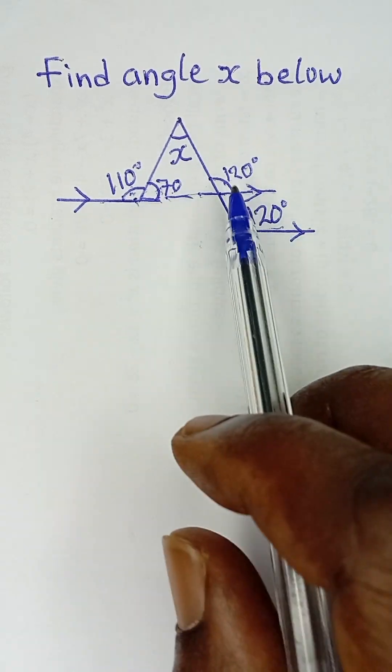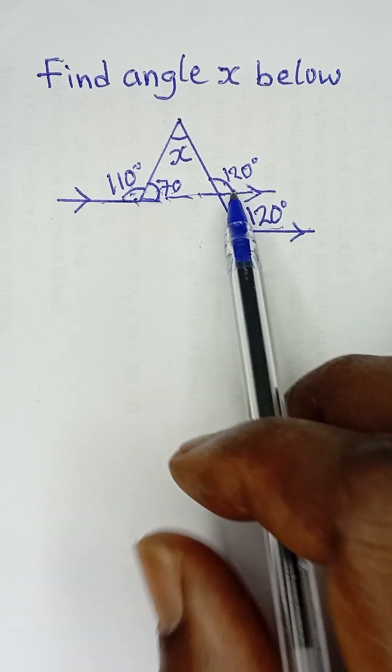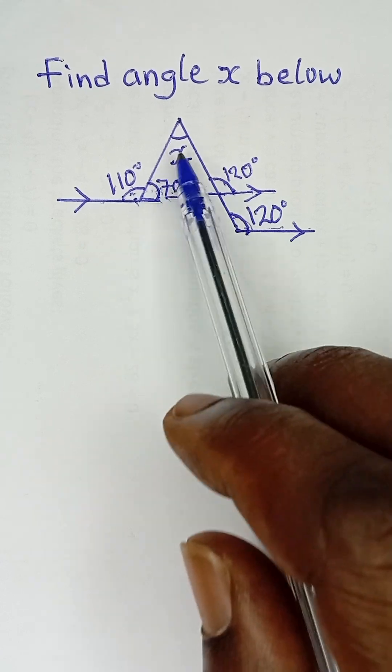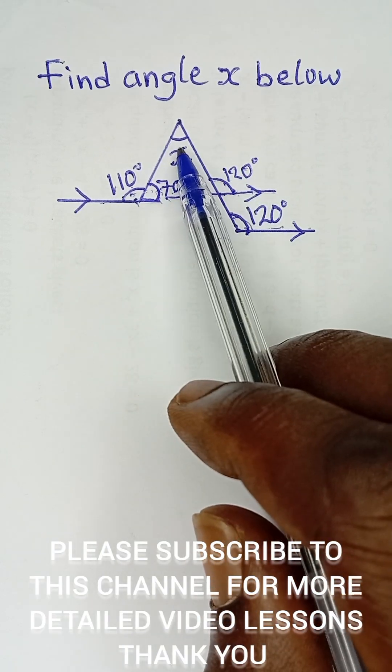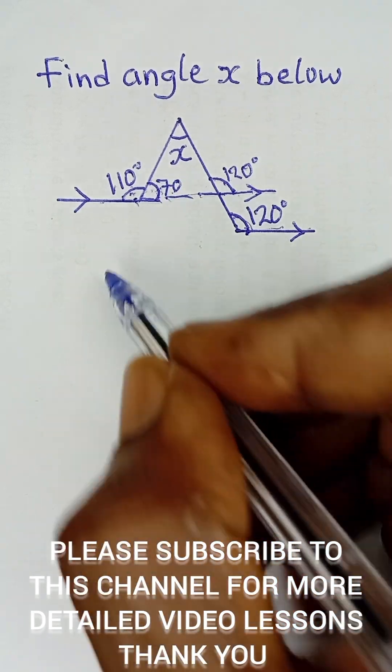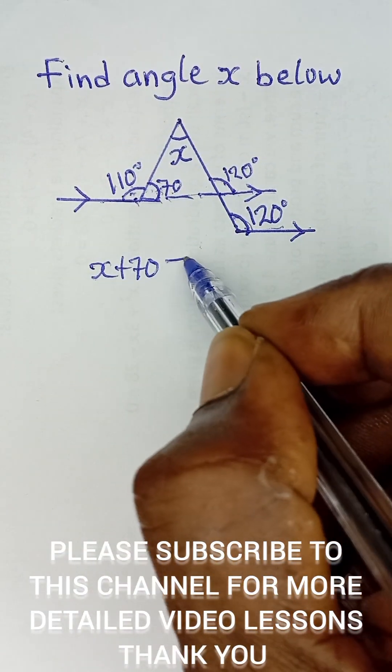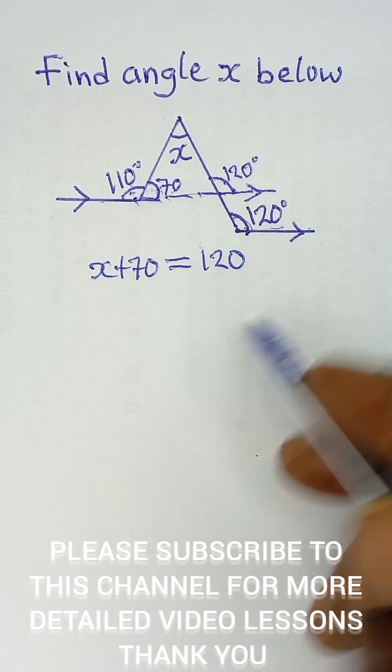Now we use the theorem that the exterior angle of a triangle is equal to the sum of the two opposite interior angles. This is an exterior angle of 120 degrees, and x and 70 degrees are the two opposite interior angles. So x plus 70 equals the exterior angle of 120 degrees.